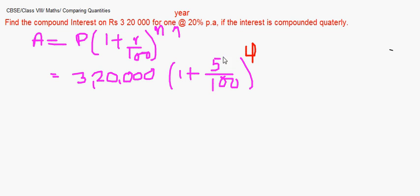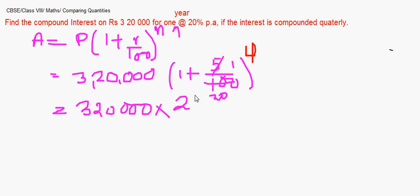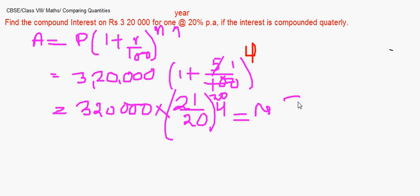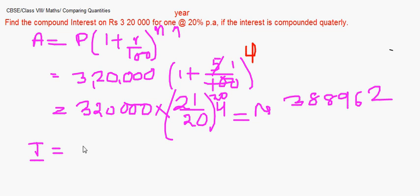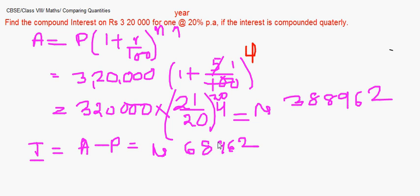Reducing 5/100 gives 1/20, so the calculation is 3,20,000 into (21/20) to the power 4. Solving this gives an amount of 3,88,962 rupees. The interest is simply amount minus principal: 3,88,962 minus 3,20,000, which gives us 68,962 rupees. This is how you do it when compounded quarterly.